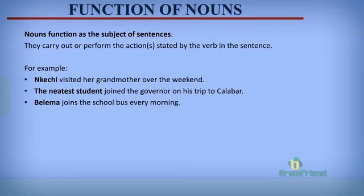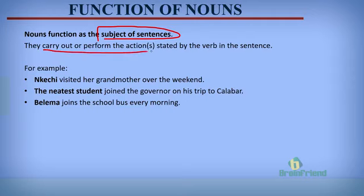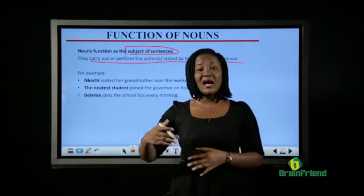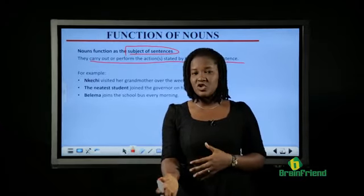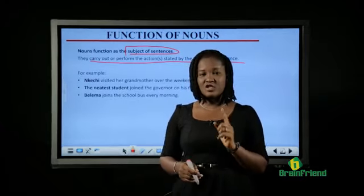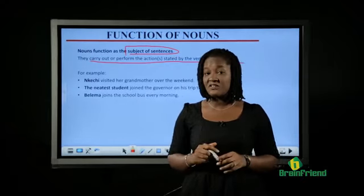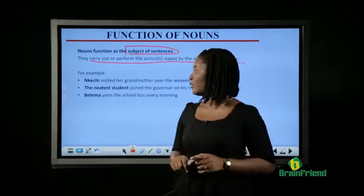Now we are going to look at functions of nouns in sentences or in grammar as a whole. What do nouns do in sentences? What roles do they perform? The first function is that nouns function as the subject of sentences. The subject of a sentence refers to the person or entity that carries out or performs the action stated by the verb.